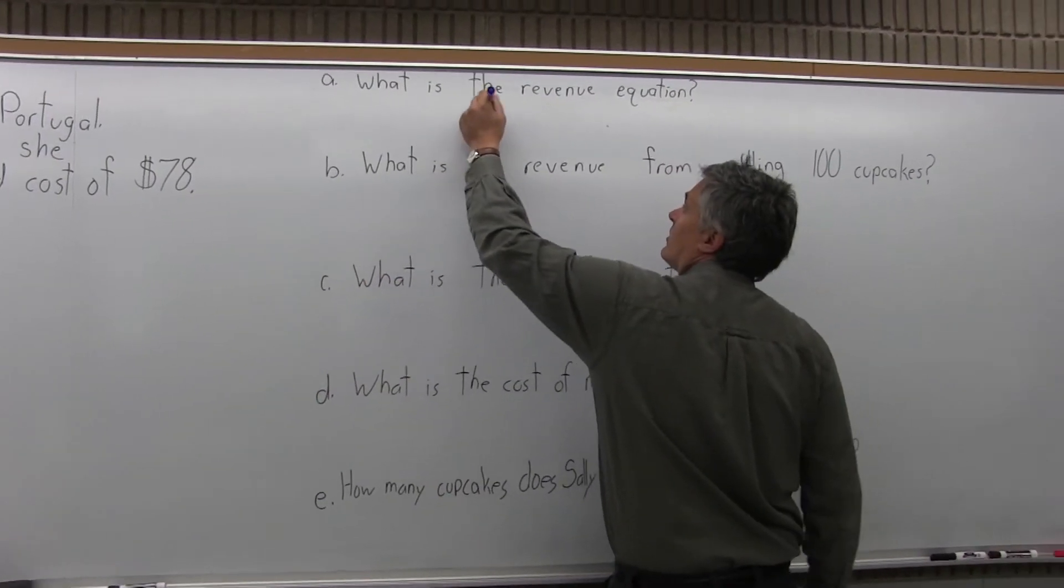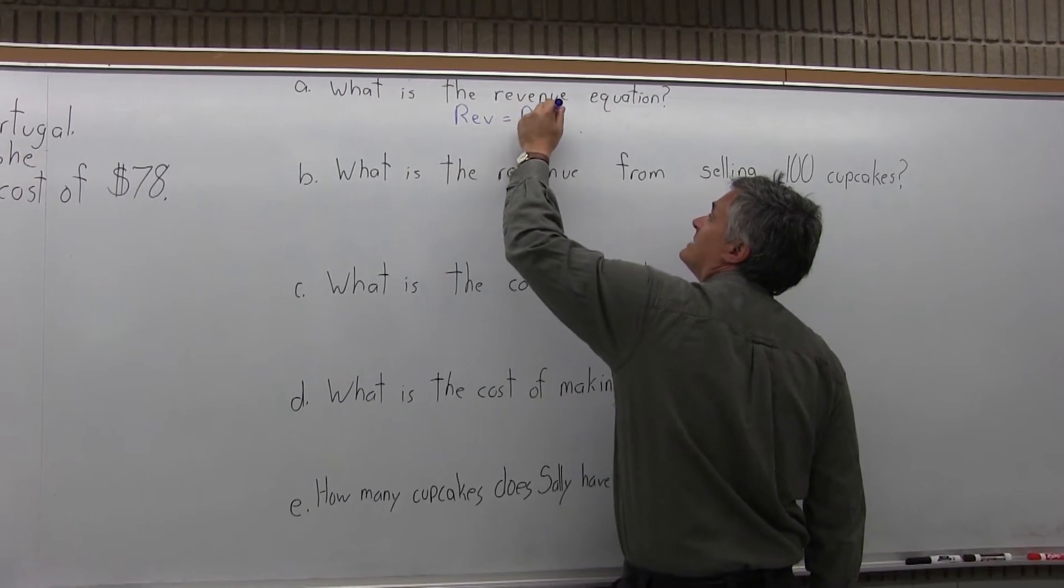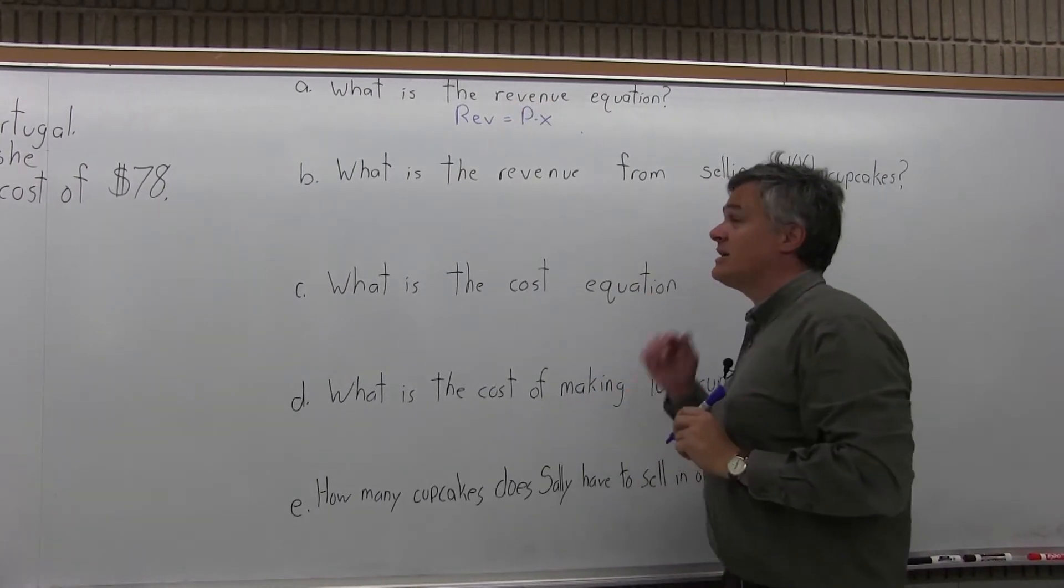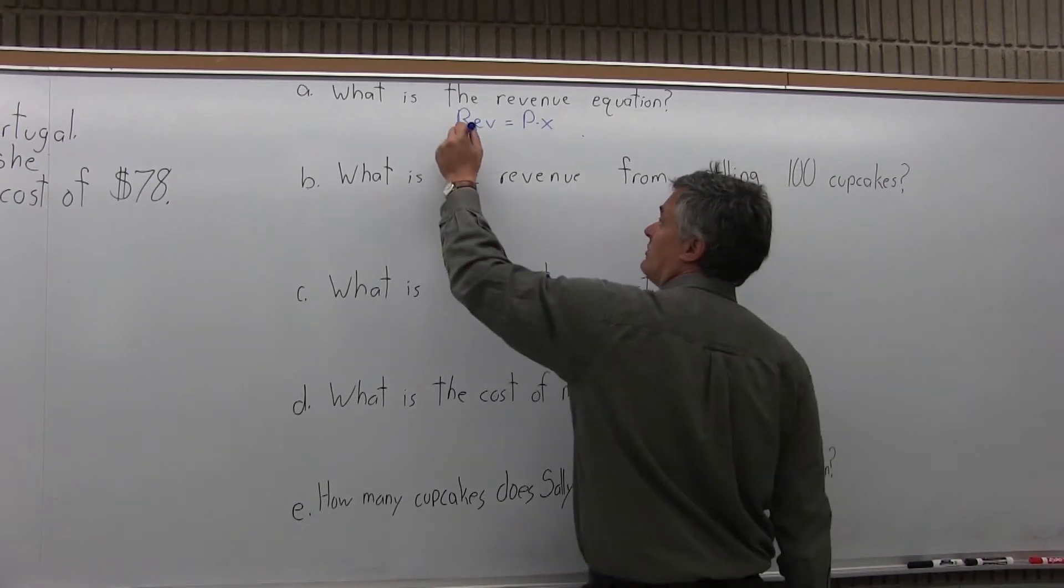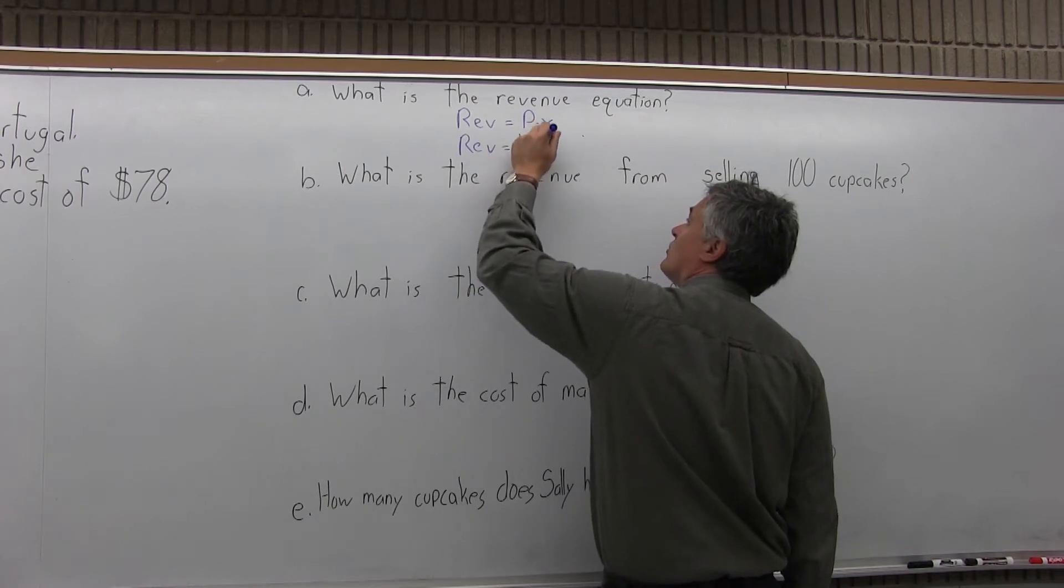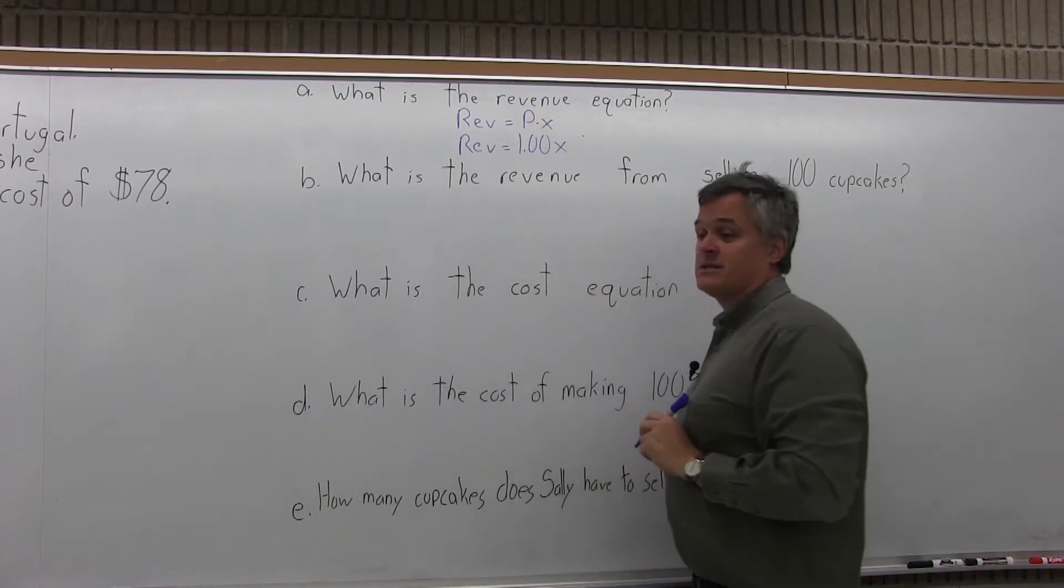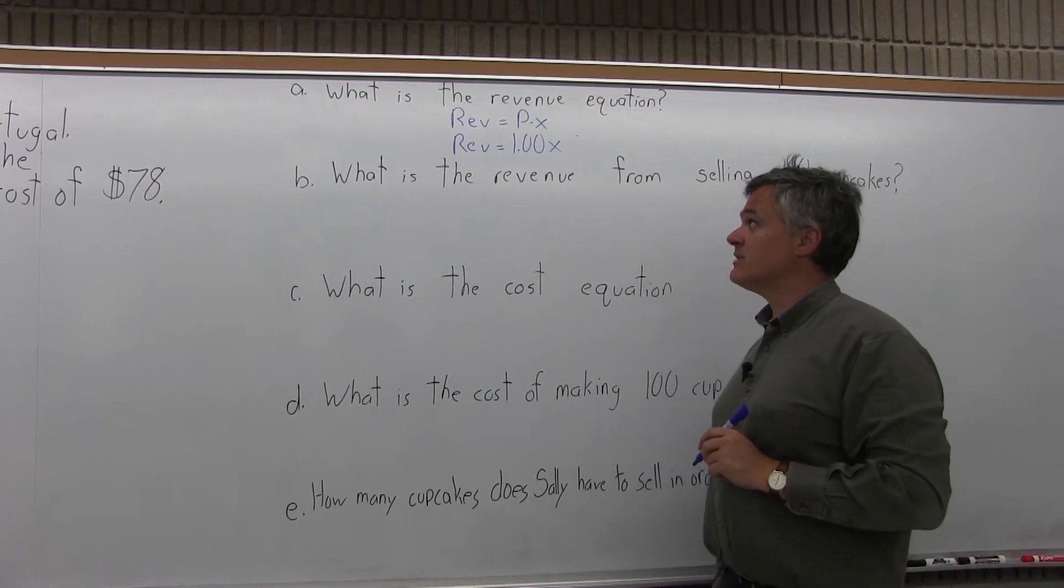The revenue equation is P times X where P is the selling price and X is the number of items sold. So for this particular problem, the revenue is $1X because the selling price is one dollar.